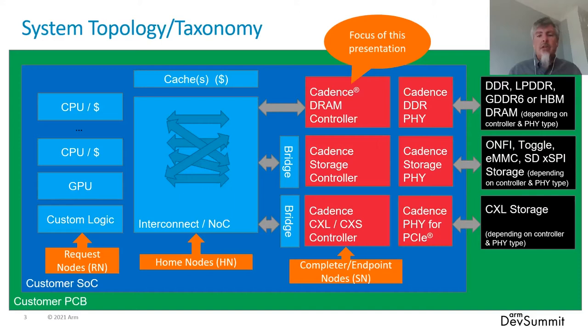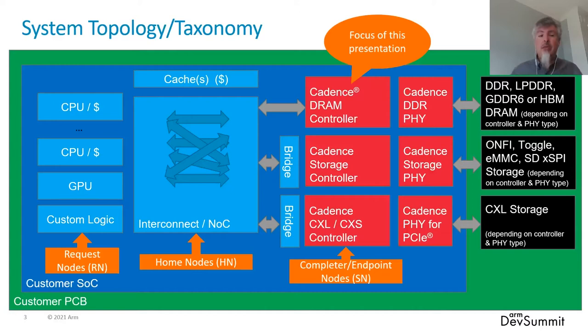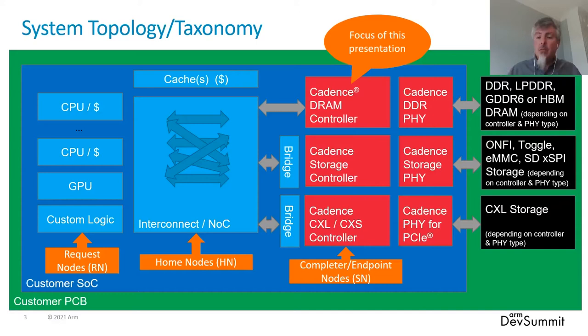Let's look at our system topology. This is a representative chip in blue on a PCB in green. The black boxes on the right are the different memory types supported by the system. On the left are the requester nodes — CPUs and caches, GPUs, and custom logic generating the majority of memory requests. Those may be connected by the interconnect or NOC (network on chip) in the middle, which allows requester nodes to talk to endpoint or completer nodes.